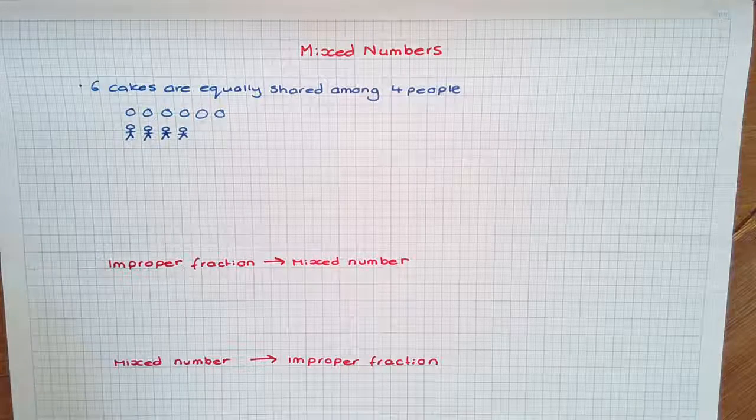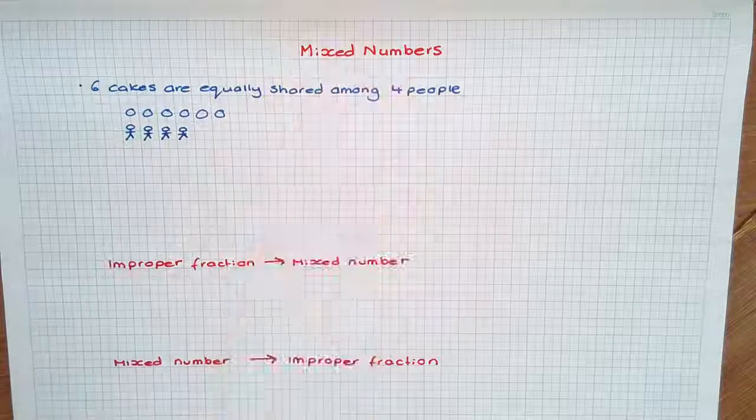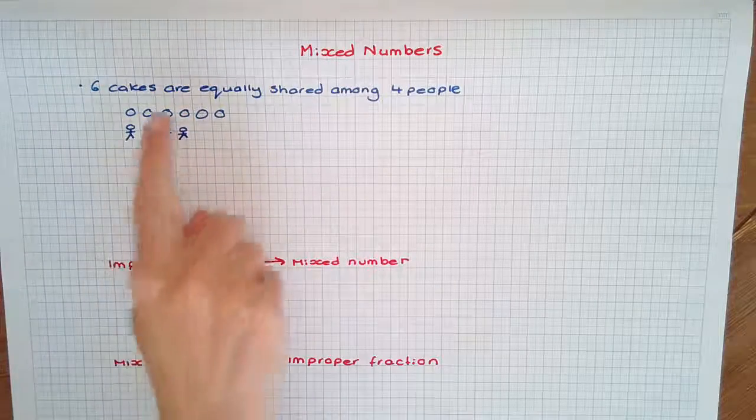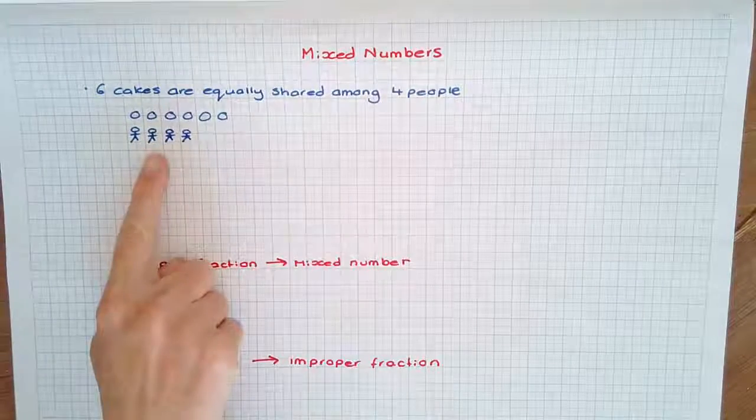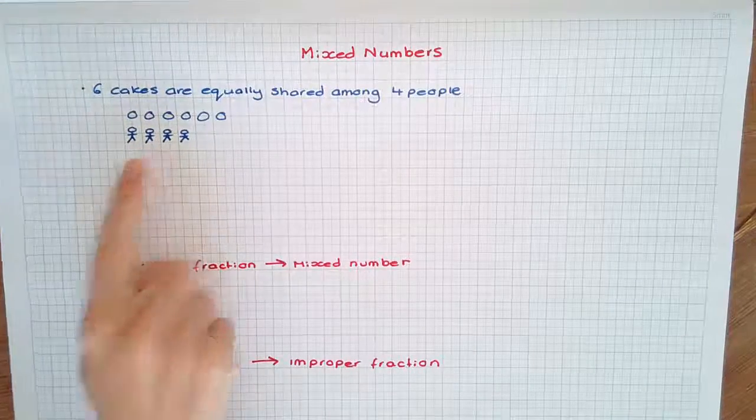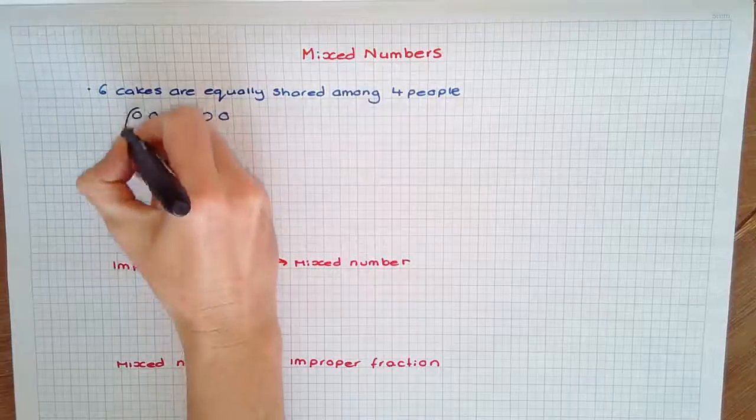In this video we're going to have a look at mixed numbers, also called mixed numerals. If six cakes are equally shared among four people, they could be represented using this diagram. Each person would get one and a half cakes.